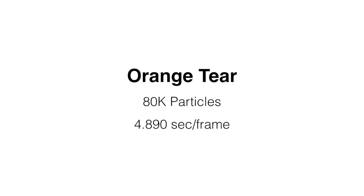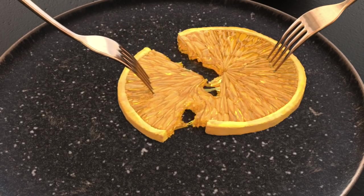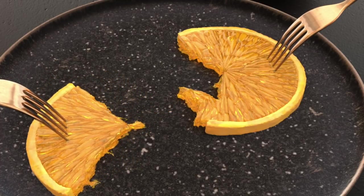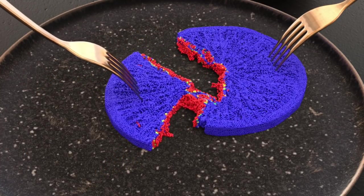Next, we pull apart an orange slice to reveal the juicy radial fracture caused by the fruit's underlying structure. And here, we visualize the evolving damage.